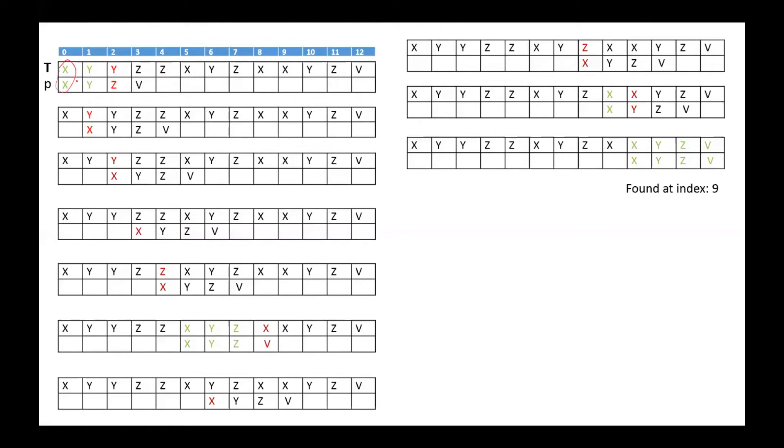Here we have a match, and here we have a match. Since we don't have a match here, we slide the pattern to the next character. Since we don't have a match here, we again slide to the next. We don't have a match. We have a match. We slide to the next.